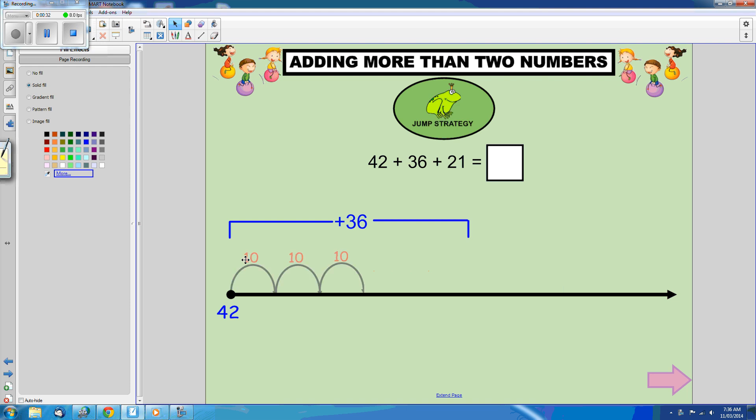So we'll jump 10 three times to get the 30, and we'll jump 1 six times to get to 36. So we've got 42 plus 10 is 52, plus another 10 is 62, plus another 10 is 72. And then we've got the little one jumps.